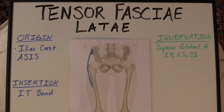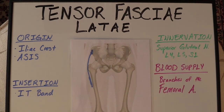It is innervated by the superior gluteal nerve L4, L5, S1. Its blood supply are branches off of the femoral artery.